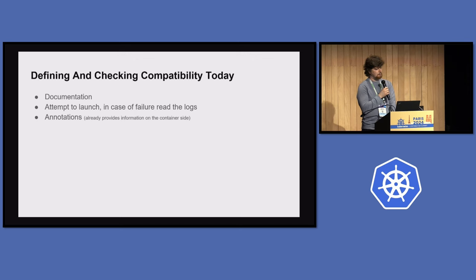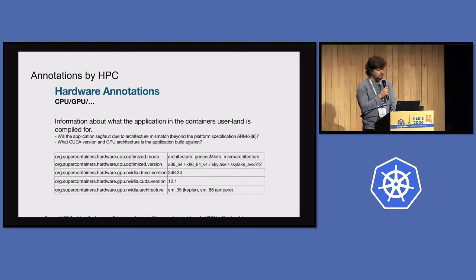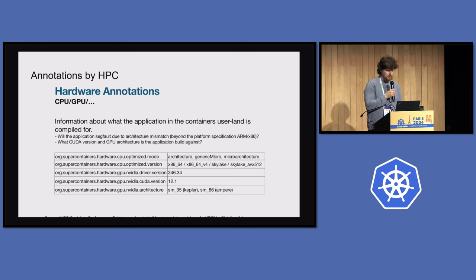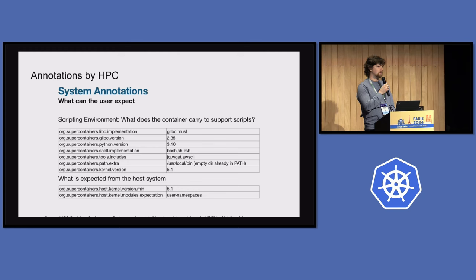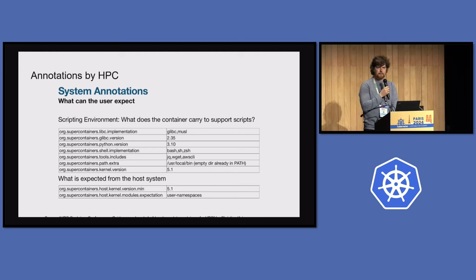The third approach is annotations — people already provide information on the container side, but it's not standardized, as I learned in the compatibility working group. An example is the HPC community, which brings their own hardware annotations: CPU version, ISA level, CPU model with available features, NVIDIA driver versions, CUDA version, libc implementations, glibc version, kernel version, and similar. This shows that specialized organizations require this information. While it may not be 90% of users, the requirement is real — telco and HPC are quite large, and others could benefit too.